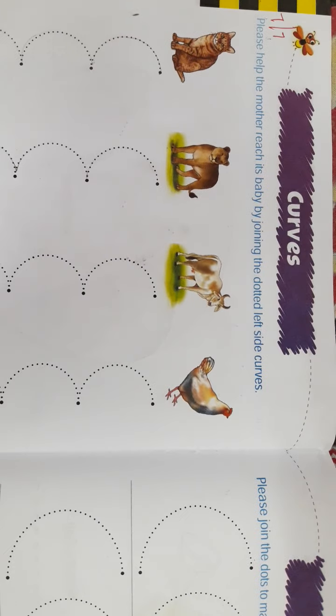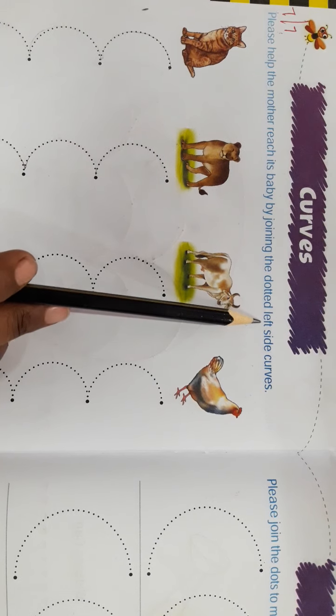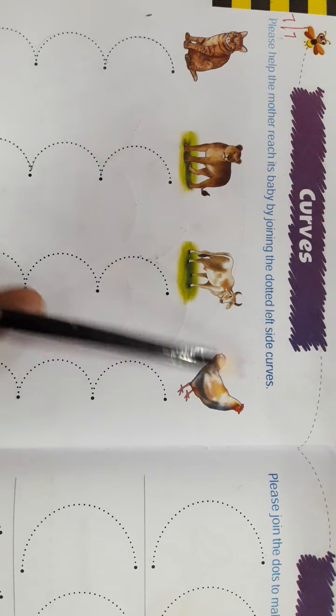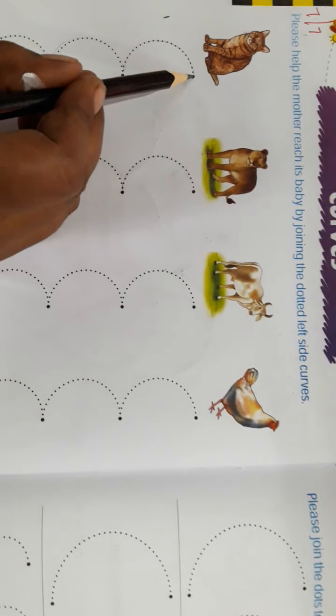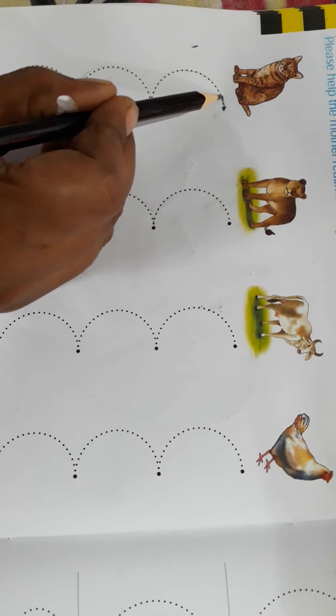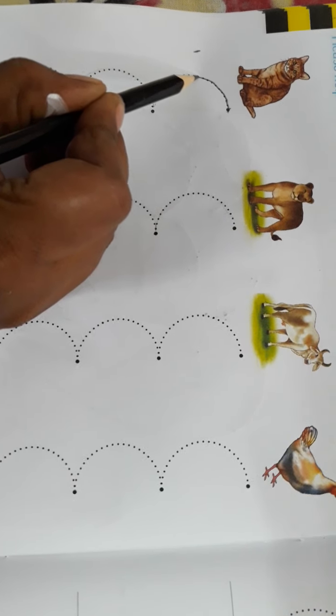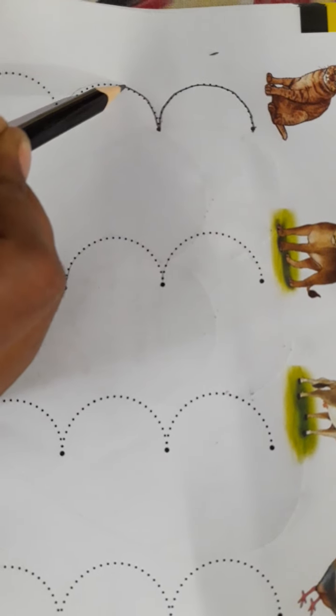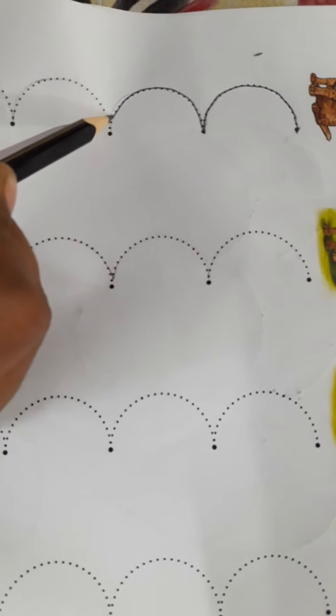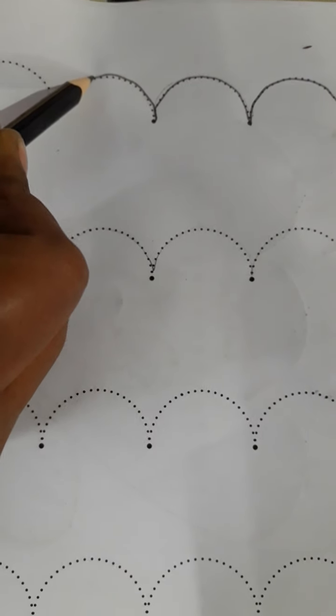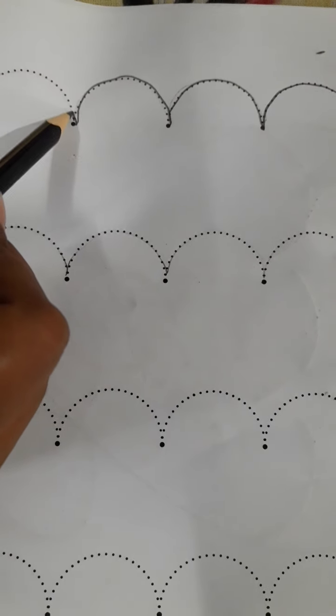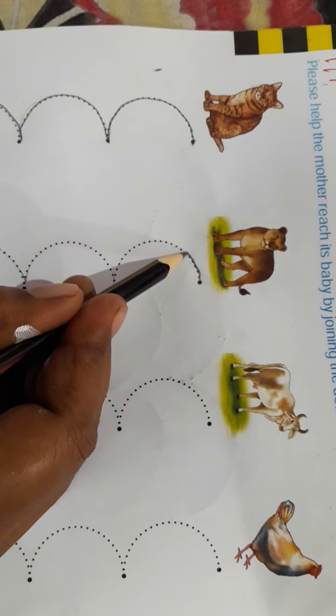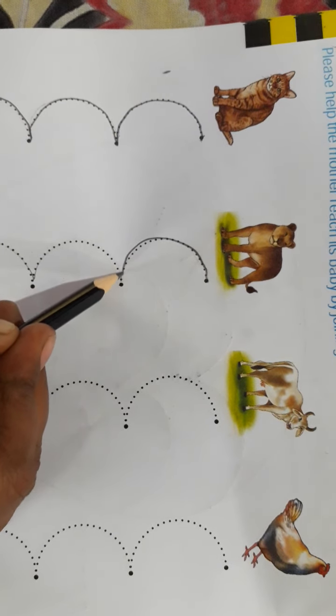Now we are going to learn left side curve. What we are going to learn? Left side curve. See here. Now we are going to match the dots and join the dots. And so we are going to join the dots. Left side curve complete. Understood? Like this. Don't shake your hand.